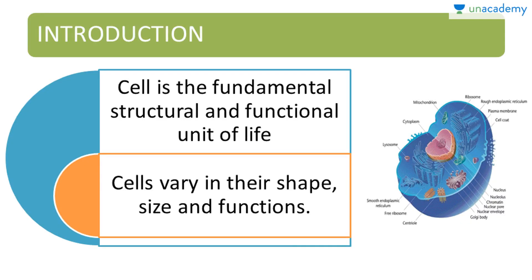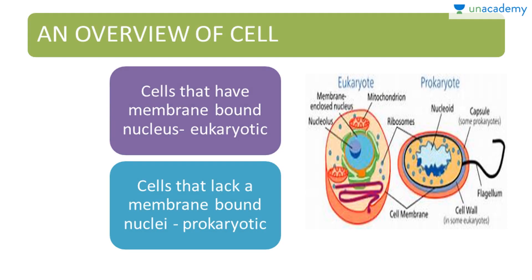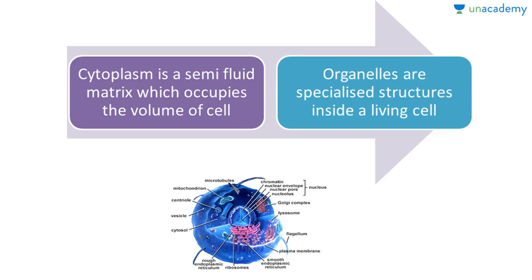As an introduction, the presence of cells in living organisms is what makes them living — that is, the cell is the fundamental structural and functional unit of life. Cells vary in shape, size, and functions. As an overview: cells that have a membrane-bound nucleus are called eukaryotic, and cells that lack a membrane-bound nucleus are called prokaryotic. The cytoplasm is a semi-fluid matrix which occupies the volume of the cell, and organelles are specialized structures found inside a living cell.